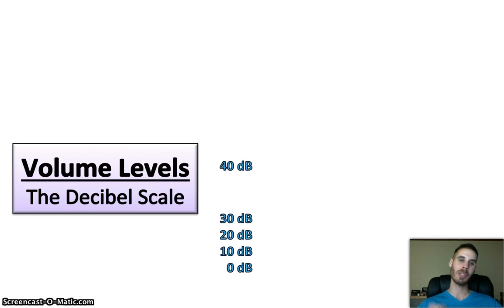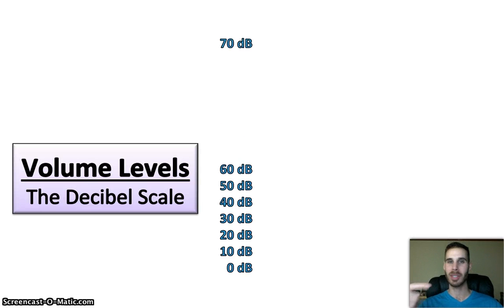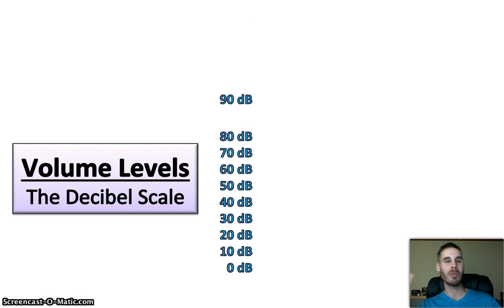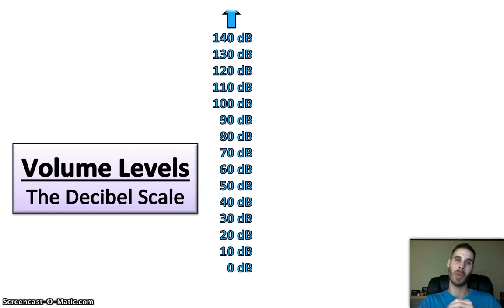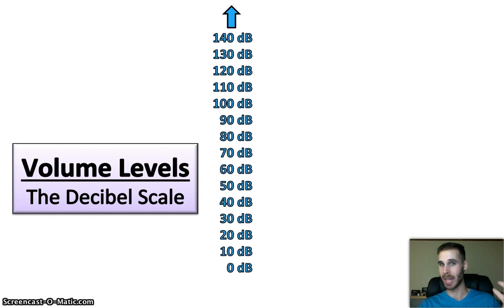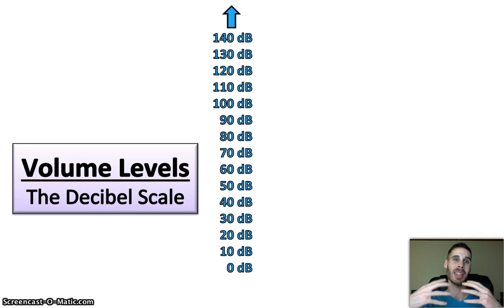I'm going to stack on top of 0 decibels: 10 decibels, 20 decibels, 30 decibels, 40 decibels, 50 decibels, 60 decibels, 70 decibels, and I'll keep going up in this stack until we get to around 140 decibels. This is going to be our approximate scale for how loud certain sounds can be. You could also think of this as the amplitude of a sound wave, or how powerful it is. Decibel is our chosen unit, and actually there could be an infinite amount of decibels if sounds kept getting louder and louder. But we're going to stop around 140 because there really aren't that many sounds created in the natural world that are louder than 140 decibels. Natural sounds rarely get above 120.